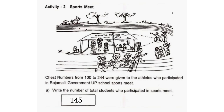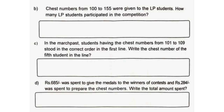Answer: 145. B. Chess numbers from 100 to 155 were given to the LP students. How many LP students participated in the competition? 155 minus 100 plus 1 is equal to 56.